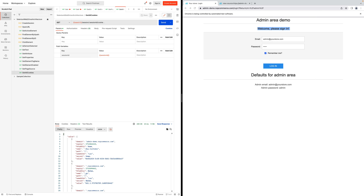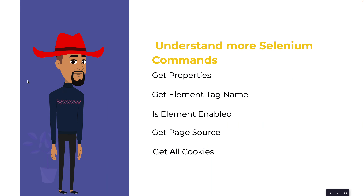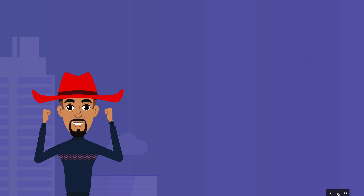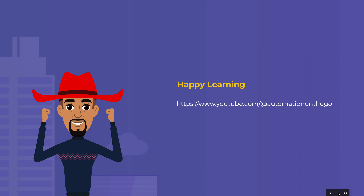That's it for this video. To recap, we covered: get properties, get element tag name, is element selected, is element enabled, get page source, and get all cookies — showing how each command internally works via API calls. Thanks for watching, and happy learning! Stay tuned for more such videos.